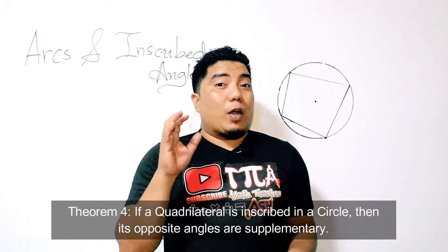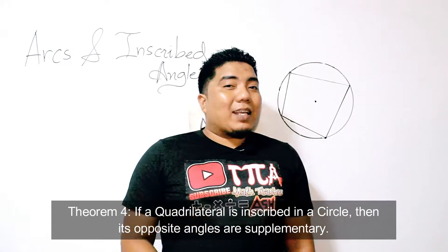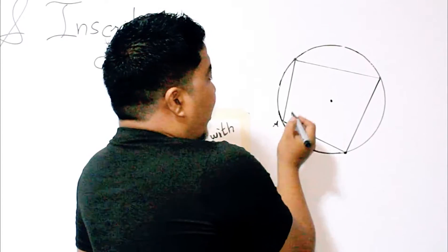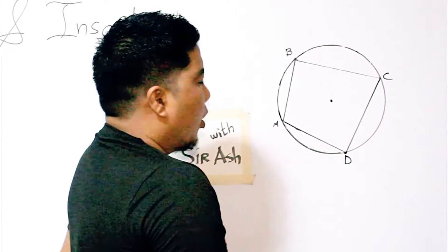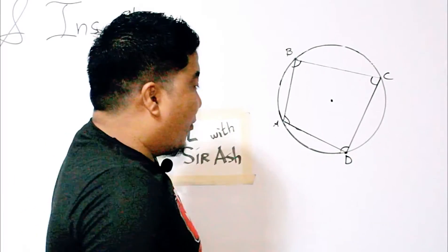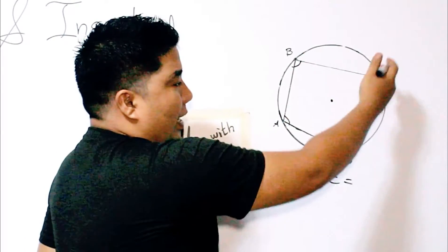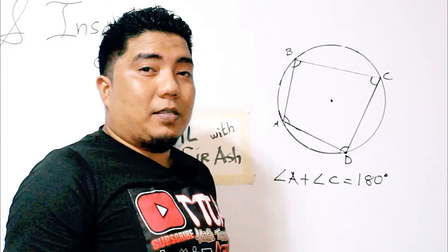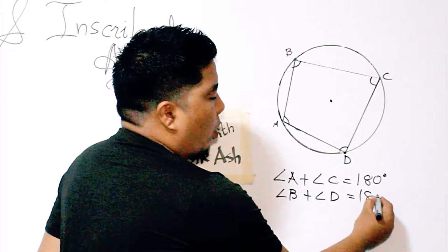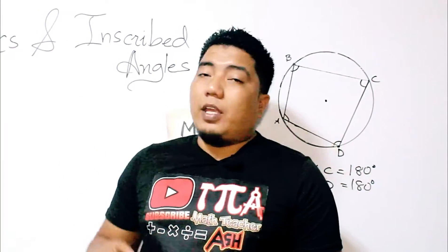Theorem number four states that if a quadrilateral — a four-sided polygon — is inscribed in a circle, then the opposite angles of that quadrilateral are supplementary. For points A, B, C, and D on the circle, angle A plus angle C equals 180 degrees, and angle B plus angle D also equals 180 degrees. That completes the four theorems about the relationship of arcs and inscribed angles.